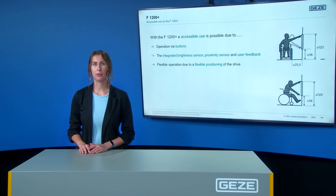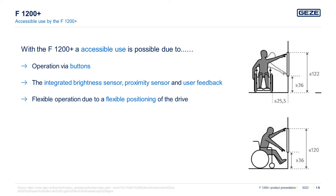Due to the features of the F1200 Plus, accessible use of tilt-and-turn windows is possible, mainly required in hotels, public, and cultural buildings. Even large and heavy window elements can be operated without any effort via the buttons. Intuitive and easily visible operation is provided by the integrated brightness sensors, proximity sensors, and user feedback — particularly important for people with cognitive impairments. Comfortable operation is also ensured from a wheelchair, as the drive can be flexibly positioned depending on the installation situation of the window.